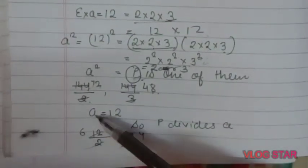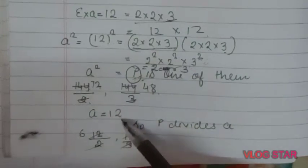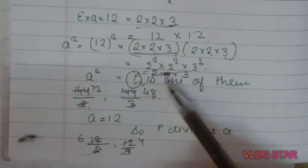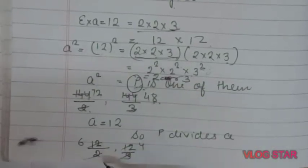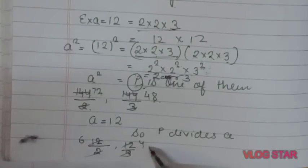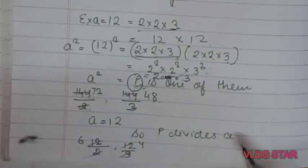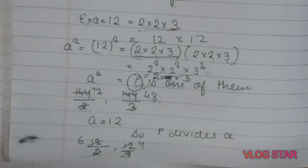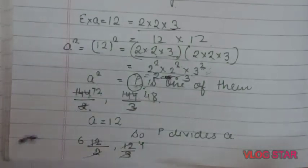Now checking that p divides a as well: a = 12. Dividing 12 by 2 gives 6, and dividing 12 by 3 gives 4. So p divides a also. This confirms the theorem: if p divides a², then p divides a. Thank you.